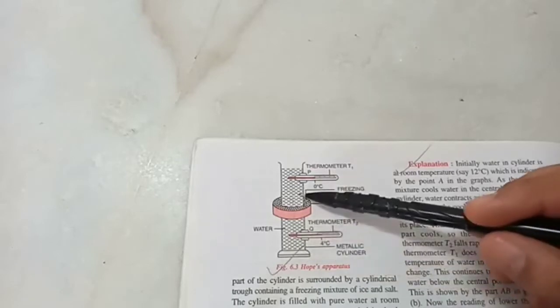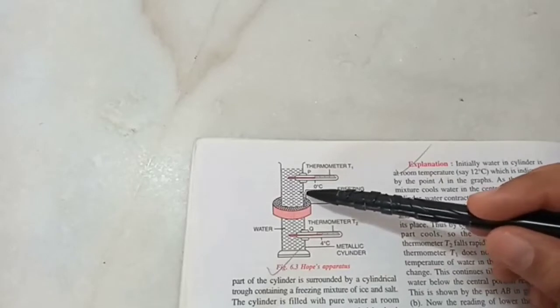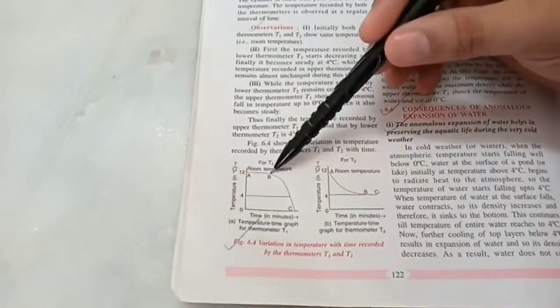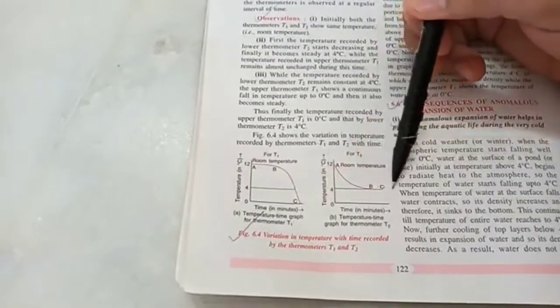And the cold water on top is always at a temperature less than 4 degree Celsius. Say 3, 2, 1, 0 degree Celsius. So you will notice that this thermometer reaches 0 degree Celsius but not this one. That is why the graph reached 0 degree Celsius but this graph is still at 4. This proves anomalous expansion of water.